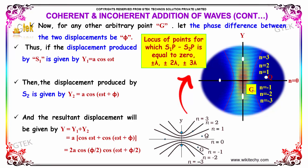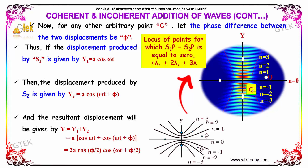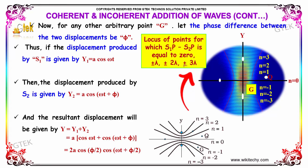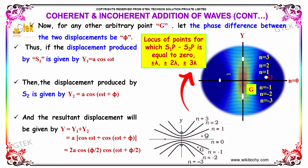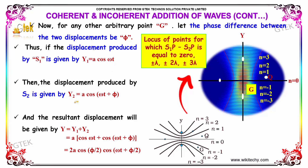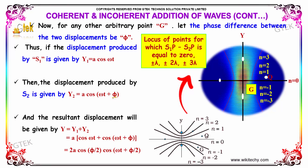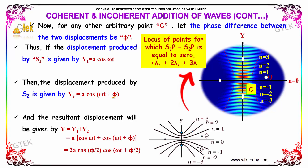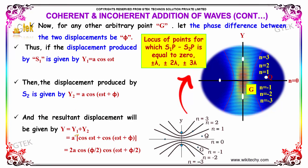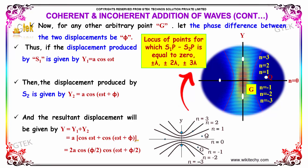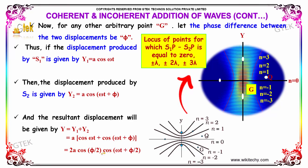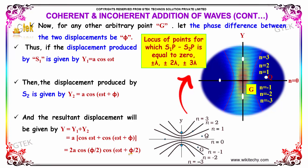Now, for any arbitrary point G, let the phase difference between the two displacements be φ. Thus, if the displacement produced by S1 is given by y1 = a cos(ωt) and the displacement produced by S2 is given by y2 = a cos(ωt + φ), then the resultant displacement y1 + y2 gives, after taking out a factor of a, the expression 2a cos(φ/2) cos(ωt + φ/2).